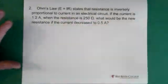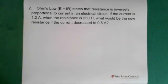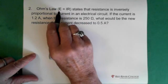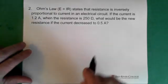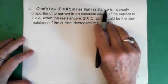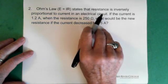Okay. So second question, and again, it's a word problem. You can pause the video, try the question, and then I'll walk through the video. Okay, so here we have Ohm's Law, voltage equals current times resistance, E = IR. And it says here that it states that resistance is inversely proportional to current in an electrical circuit.